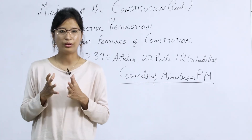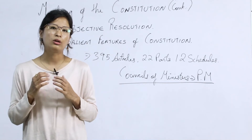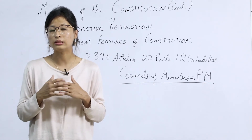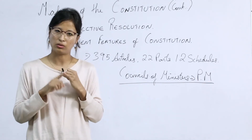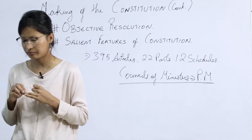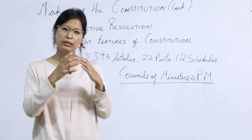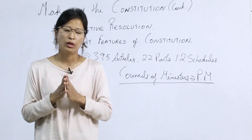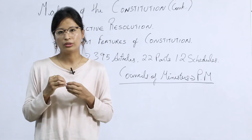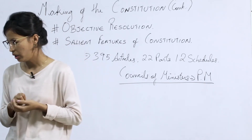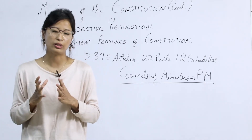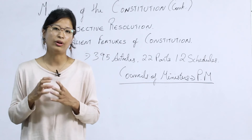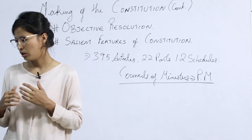Federal features include: first, cordial coexistence between the center and all 29 states; second, division of power between the central government and the 29 states; and third, the role of the Supreme Court, whose voice is final as the interpreter of the constitution. These three features demonstrate federal characteristics.